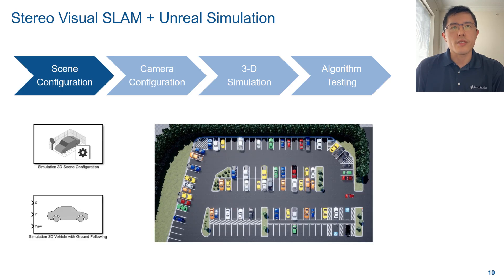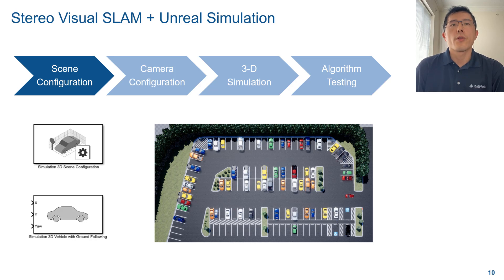To set up the scene, use the Simulation 3D Scene Configuration block. Here, we select the parking lot scene. You can add more vehicles into the scene using the Simulation 3D Vehicle with Ground Following block.